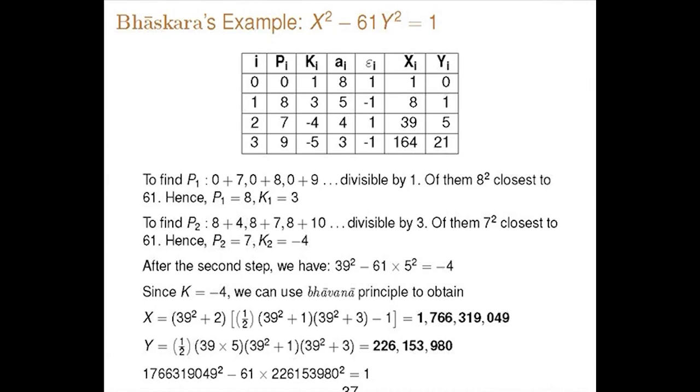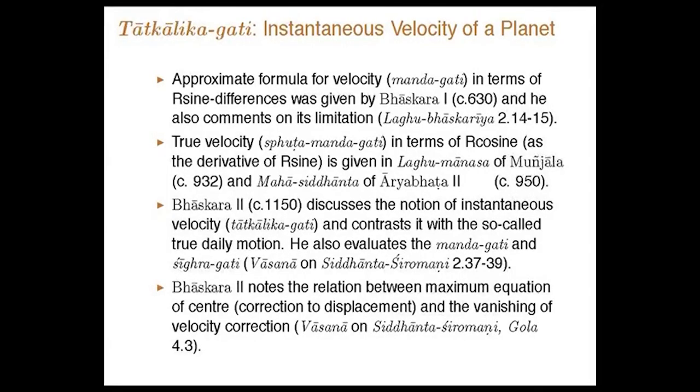Brahmagupta's bhavana theorem enabled later Indian mathematicians to develop the famous Chakrawala algorithm — one of the most celebrated algorithms in Indian mathematics — for solving equations of the form x² − Dy² = 1. For the famous problem x² − 61y² = 1, the solutions are approximately 1.7 trillion and 226 million — the lowest integer solution. Bhaskaracharya solved this equation in 1150 by a very simple method. This problem was posed again 500 years later when Fermat challenged British mathematicians. Ideas of calculus also started developing in the context of astronomy — particularly the concept of instantaneous velocity, needed to understand the continuously changing rate of motion of the moon.